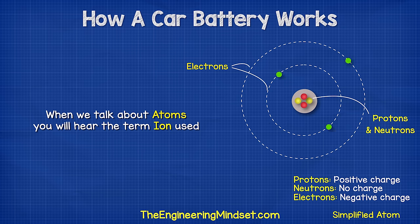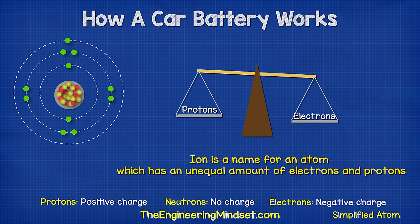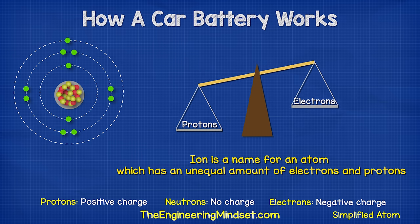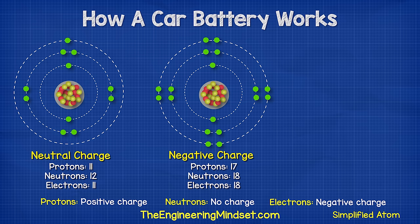When we talk about atoms you will usually hear the term 'ion' used. An ion is an atom which has an unequal number of protons or electrons. An atom has a neutral charge when it has the same number of protons and electrons, because the protons are positively charged and the electrons are negatively charged, so they balance out.